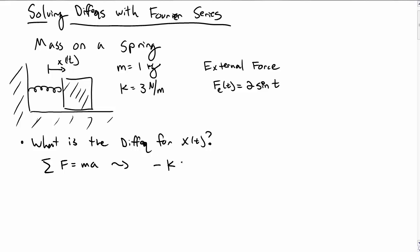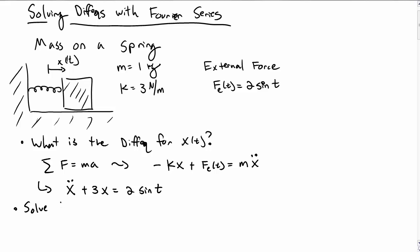The sum of the forces is equal to the mass times acceleration, which tells us that minus kx plus the external force is equal to m times x double dot. Writing that as a differential equation, we have x double dot plus 3x is equal to 2 sine of t, using our values for m and k.